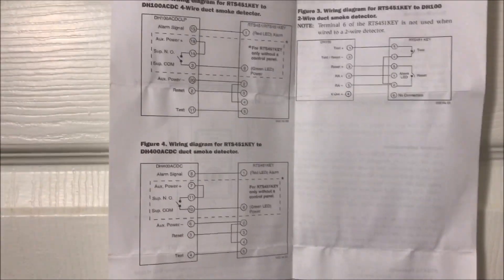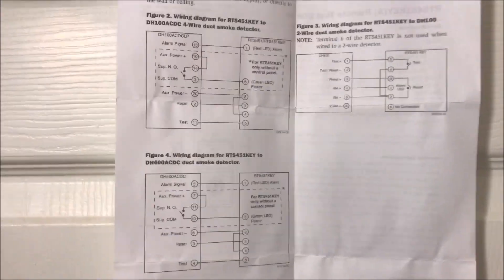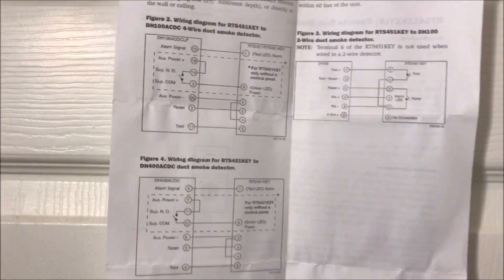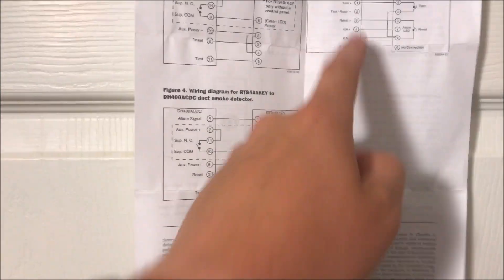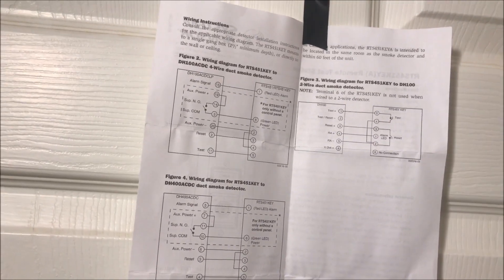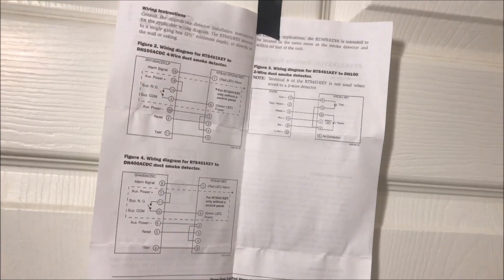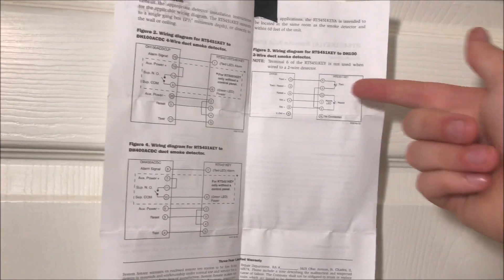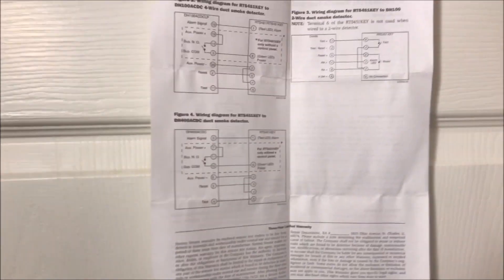There are three diagrams that you can follow. I'm not going to go into them, but here they are. This is the documentation for the key switch. So you see, these are your duct detectors. It's pretty simple. You take your red LED and you hook up to the red LED spot.